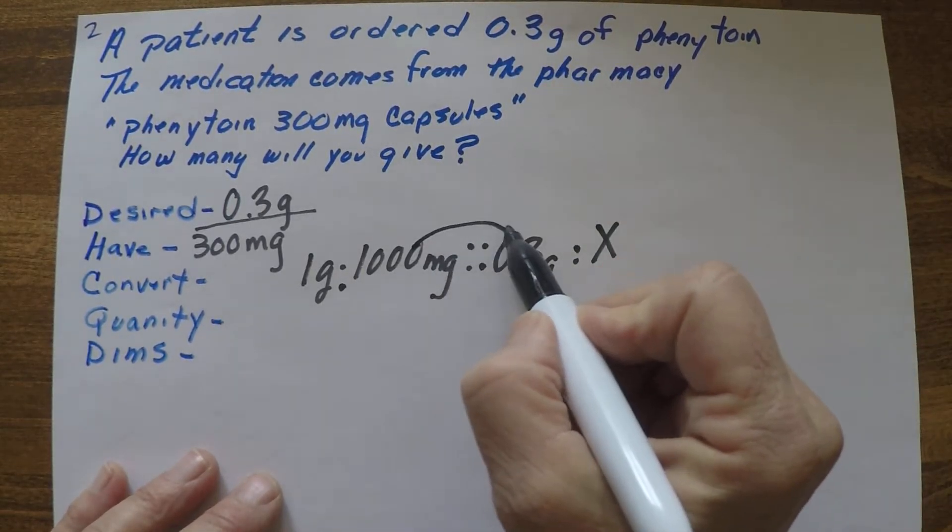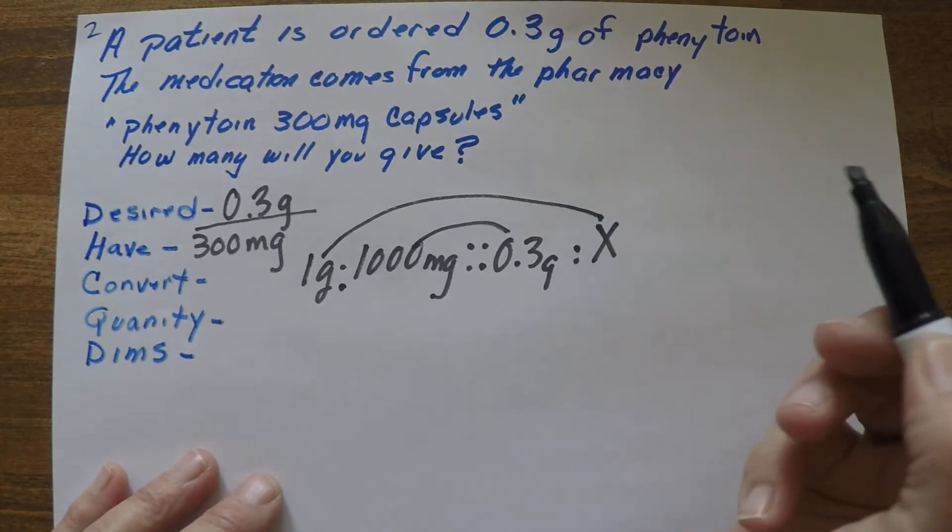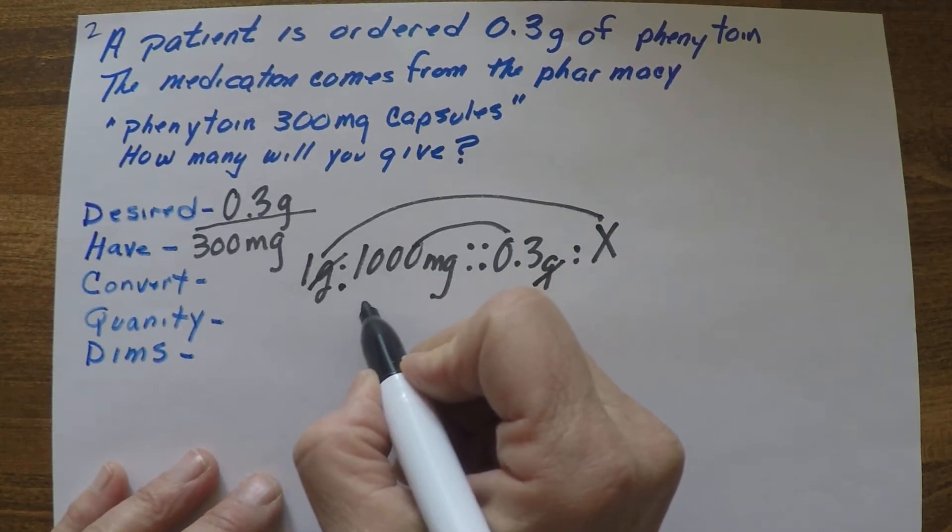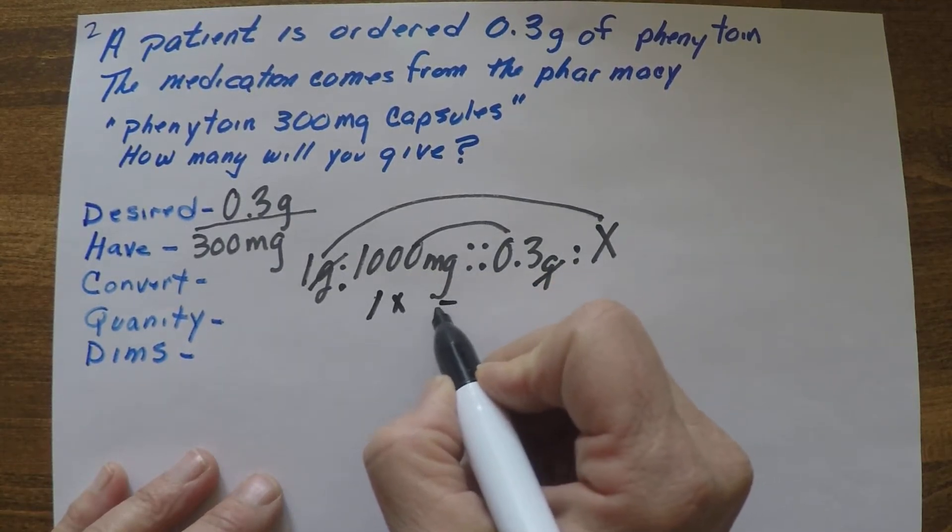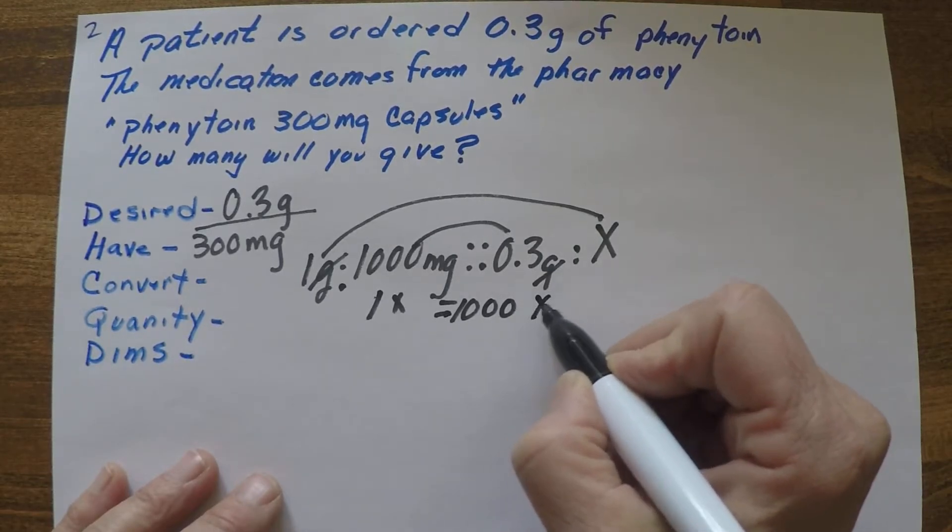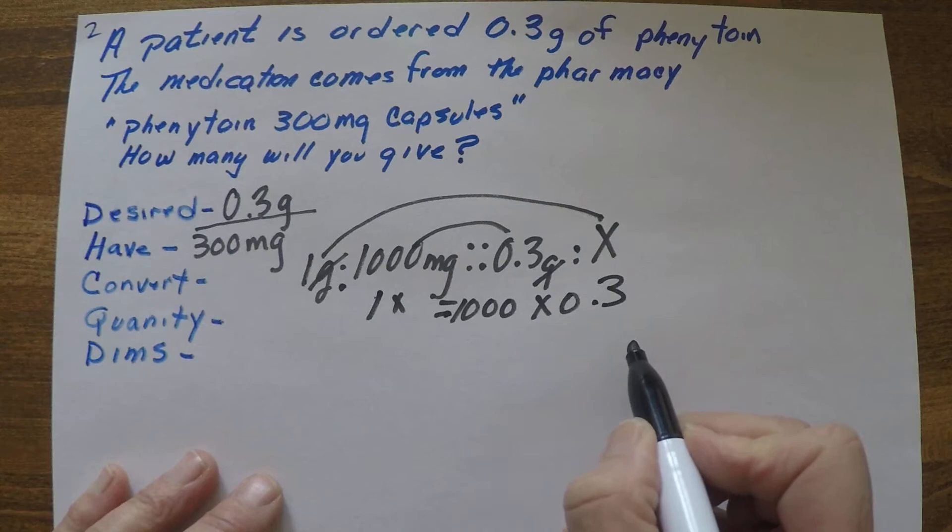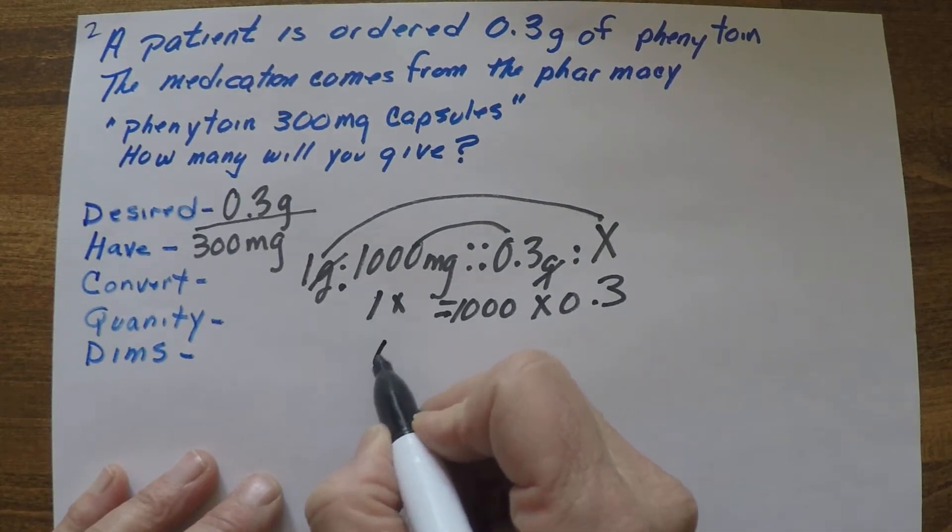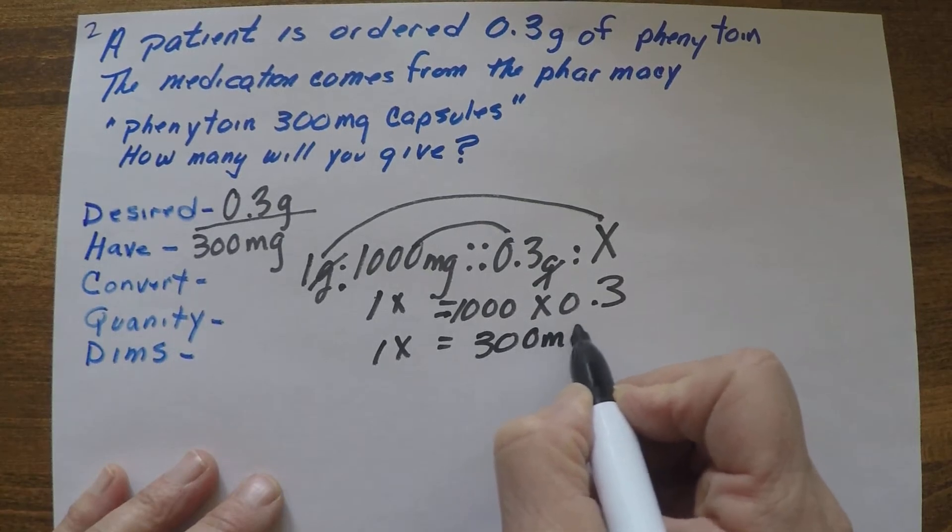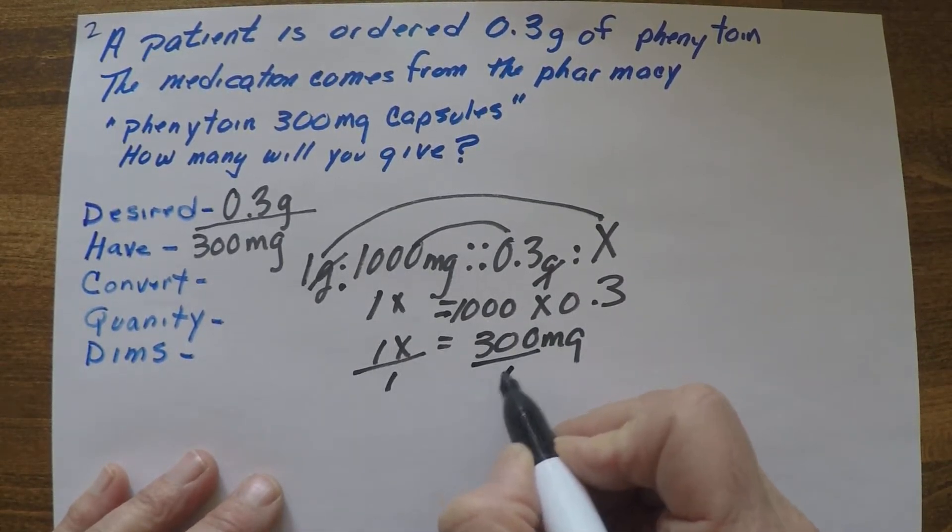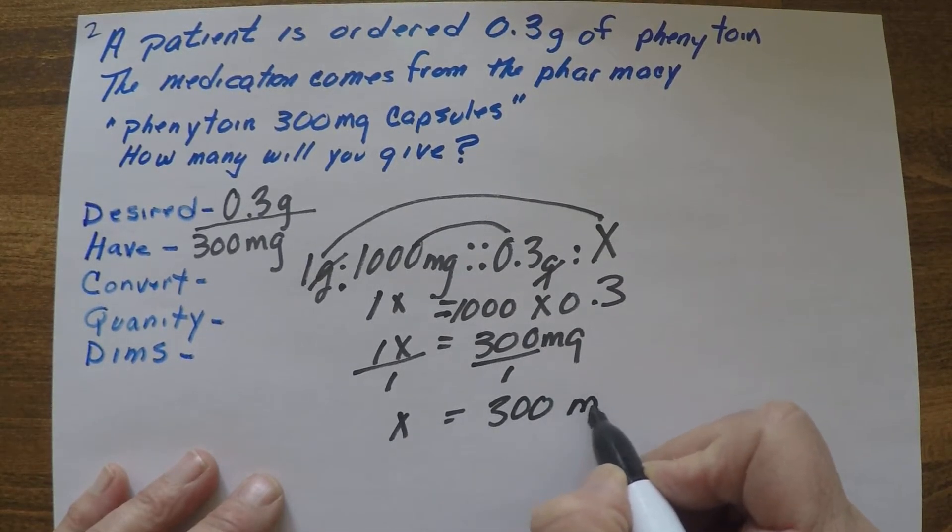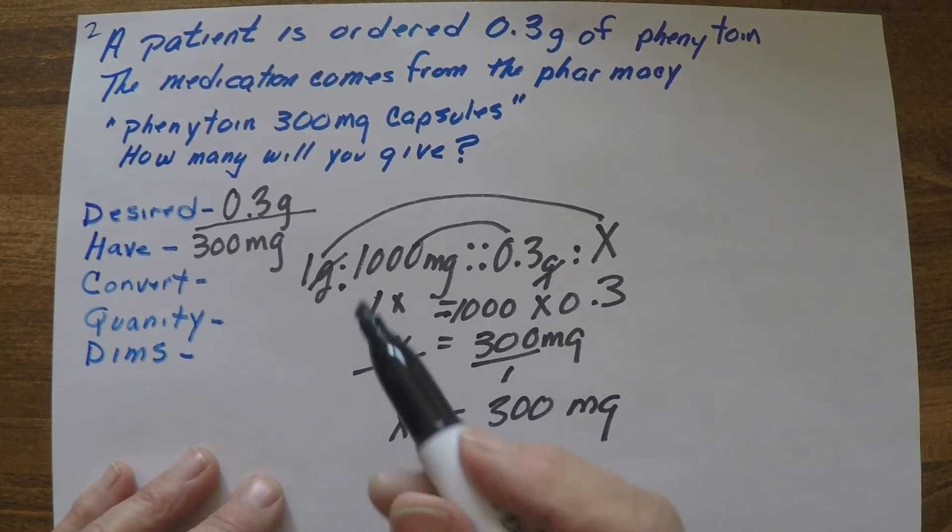So when you do ratios you multiply the insides and the outsides. We're going to cancel out the grams here, so we have 1X equals 1,000 times 0.3. And then for math, we have 1X equals 300 milligrams. And then we divide both sides by one, so X will stand alone. X equals 300 milligrams.